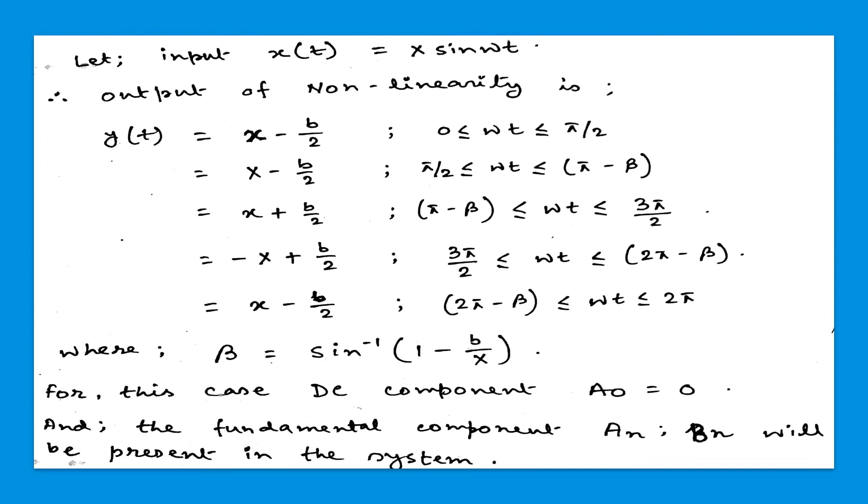So if we assume that input function X(t) equals X sin(ωt), then the output of the nonlinear function Y(t) equals X minus B/2 when the limit is from 0 to π/2. The function Y(t) equals X minus B/2 when the limit is π/2 to π minus β.